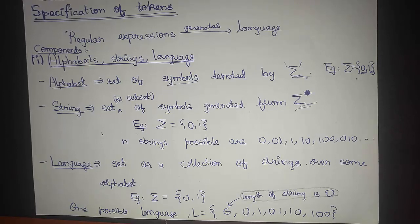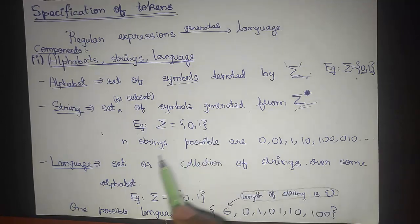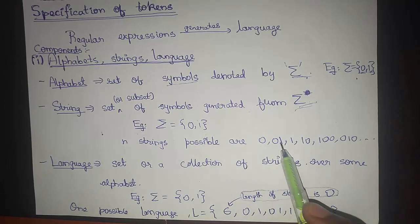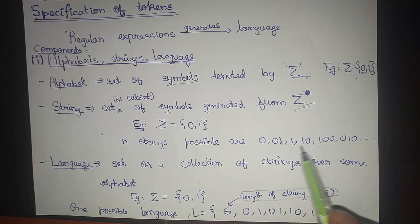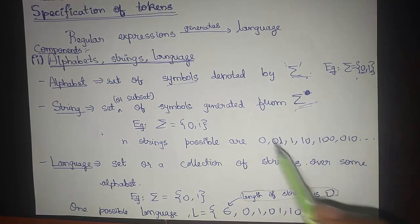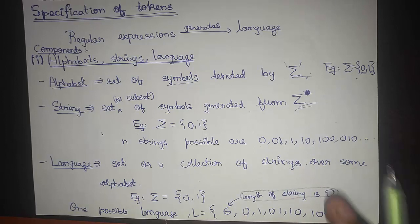What is a string? A string is a finite set of symbols generated from Sigma, that is the input alphabet. If we have the input alphabet as {0, 1} — the binary alphabet — then possible strings are: 0, 00, 01, 1, 10, 100, and so on. These are all possible strings.